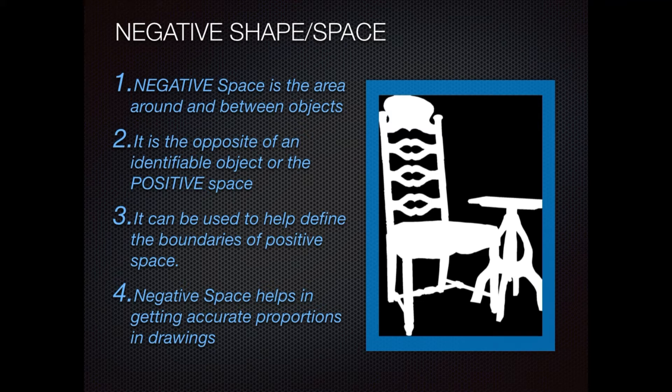Negative space can be used to help define the boundaries of positive shape. It helps you draw objects by looking at the air. Oftentimes the shapes are more simple because of this, so negative space helps in getting accurate proportions in a drawing — especially if you're having trouble with the size and shape of objects, or even if you're drawing people. Looking at the negative space around the object or figure helps you get proper proportions.